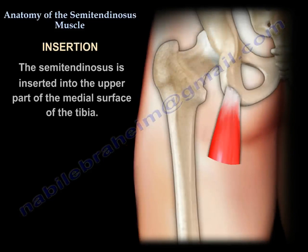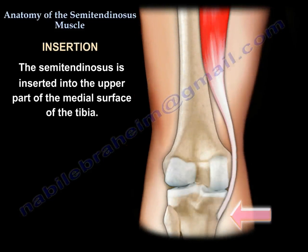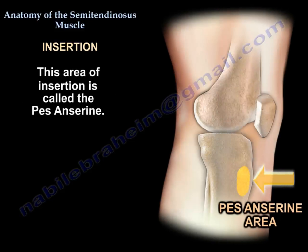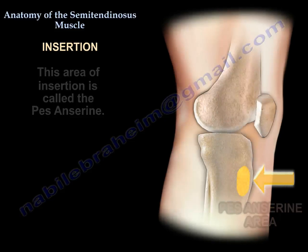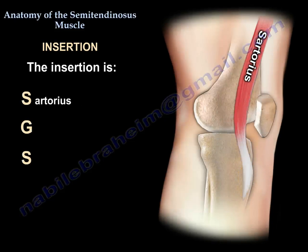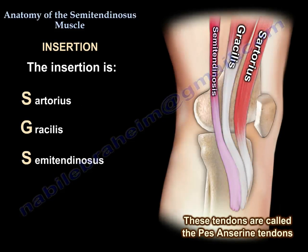The insertion is the upper part of the medial surface of the tibia. This area of insertion is called the pes anserine. The insertion is SGS: Sartorius, Gracilis, and Semitendinosus.